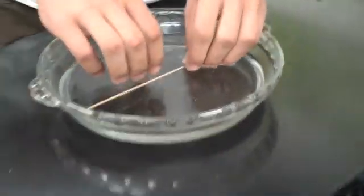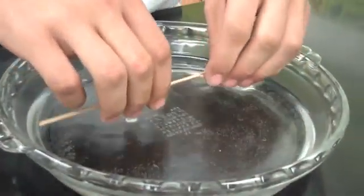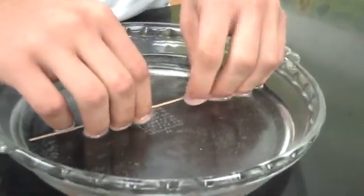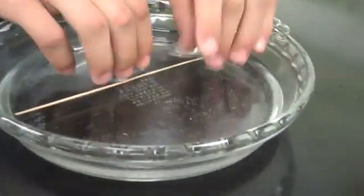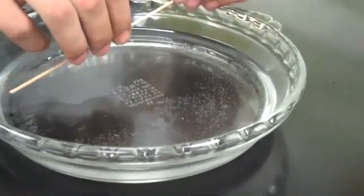This is one way to curve balsa wood to use on either a plane or helicopter. What we do is we soak it in water for about 15 minutes. It's been soaking for a little bit.